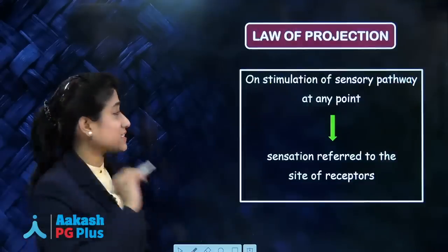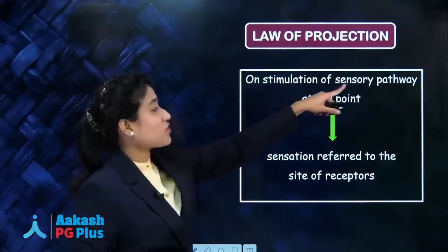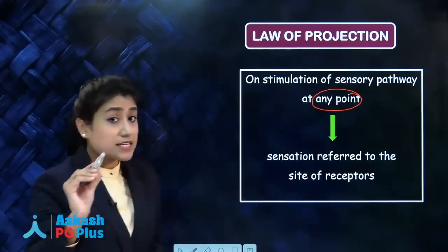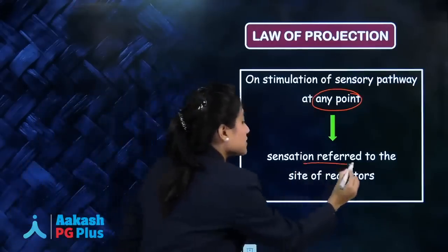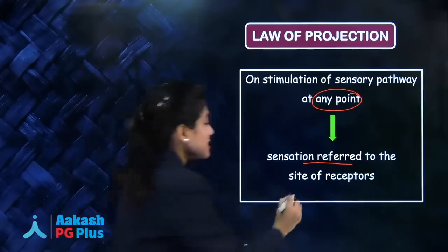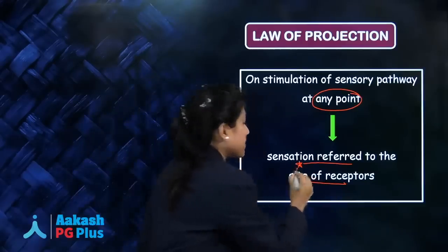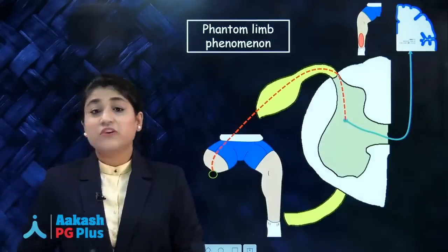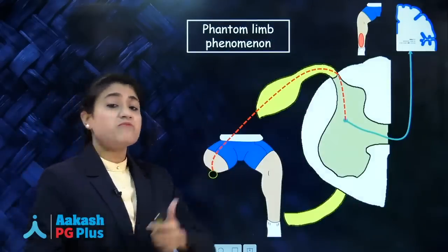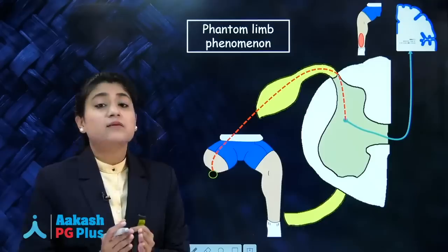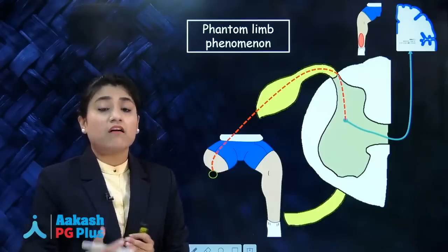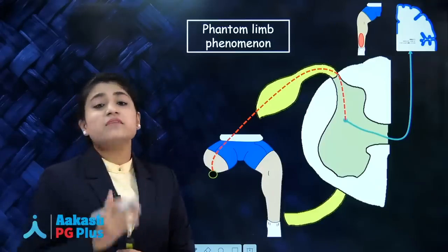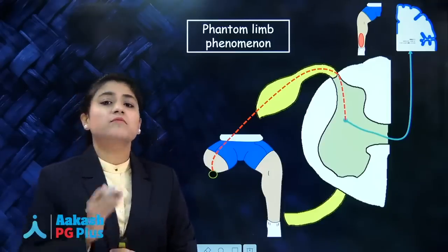This is nothing but the law of projection: on stimulation of the sensory pathway at any point, sensations are referred to the site of receptor. Now, phantom limb phenomenon — what is phantom limb? Here the patient has pain or other sensations in an amputated limb. How does this happen? This phantom limb phenomenon is based on the law of projection.